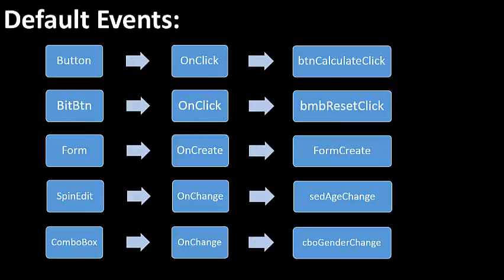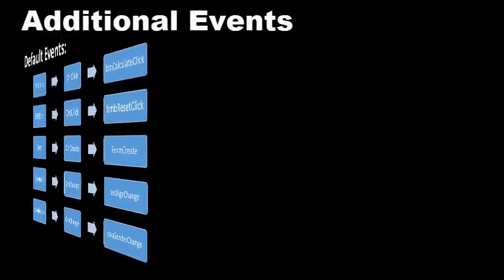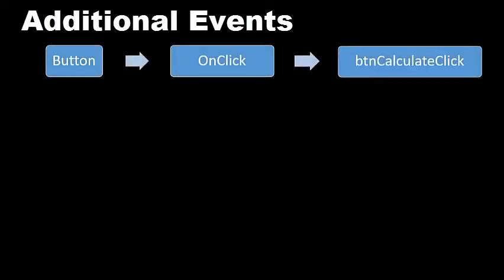These are just some of the components and their default events. You can experiment with more — just add any component on a form and double click on it. After a while you will be familiar with a whole bunch of components and their default events. Most components can respond to more than one event. BTN Calculate has an onClick event as its default event, which is triggered when the button is clicked and linked to an event handler called BTNCalculateClick.